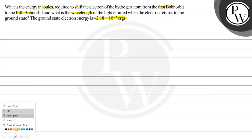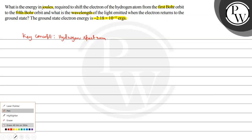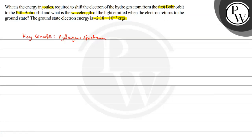So let us solve this question. The key concept here is the hydrogen spectrum. We are given that the ground state electronic energy, let us say E1, is minus 2.18 multiplied by 10 to the power minus 11 ergs. And we know that En is equal to E1 divided by n squared, where n is the orbit number.